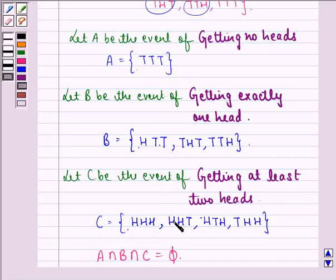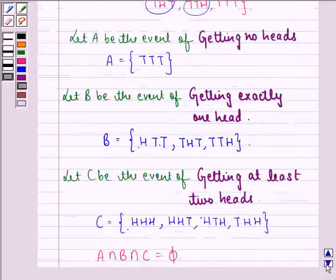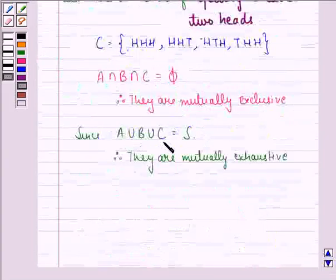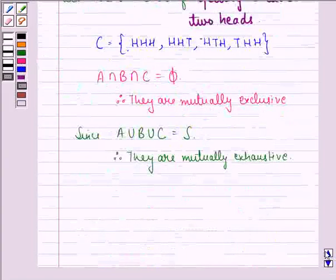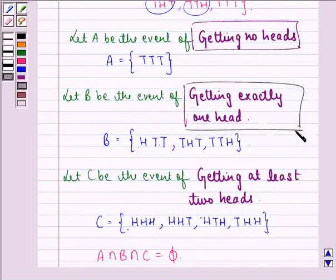That means when we combine these 3 events, we get the main sample space. So in such conditions, we say that they are mutually exhaustive. So our answer to the question is getting no heads, getting exactly one head and getting at least two heads.